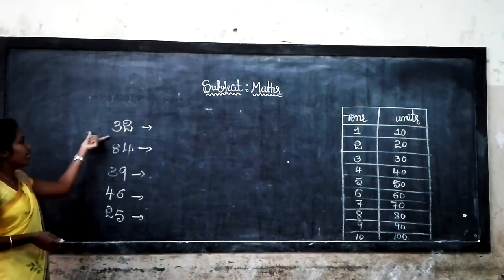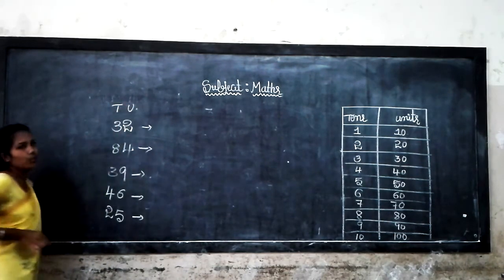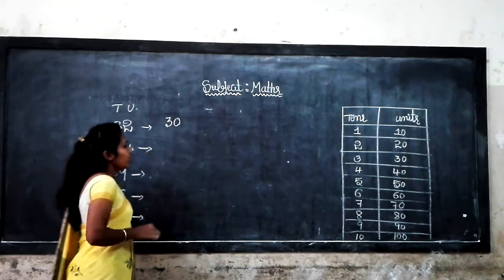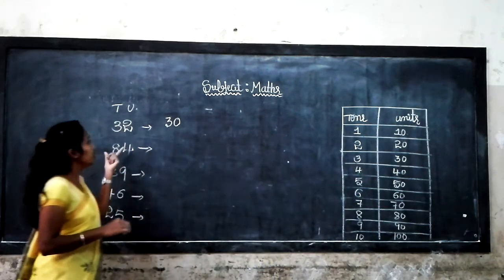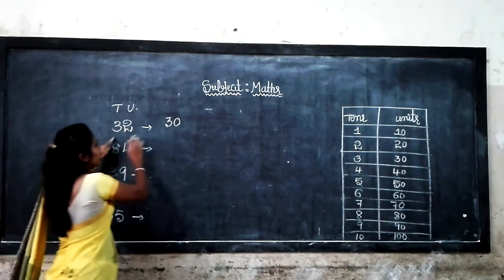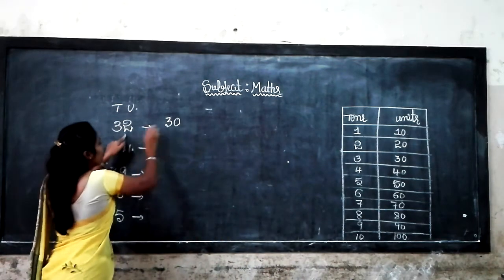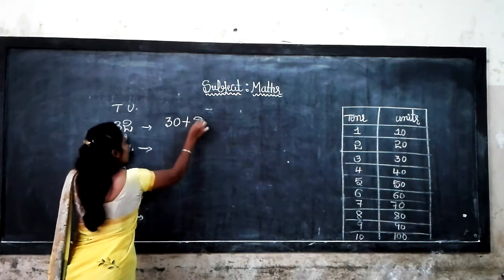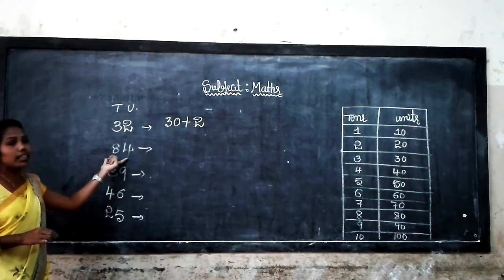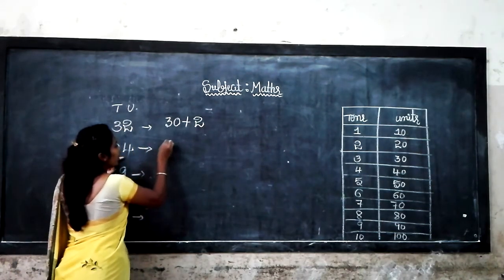Now expand each number. Number 1: there are 3 tens and 2 units. 3 tens is equal to 30, plus 2 units is equal to 2. Come to the next one: 84. 8 tens is equal to 80, plus 4 units is equal to 4.